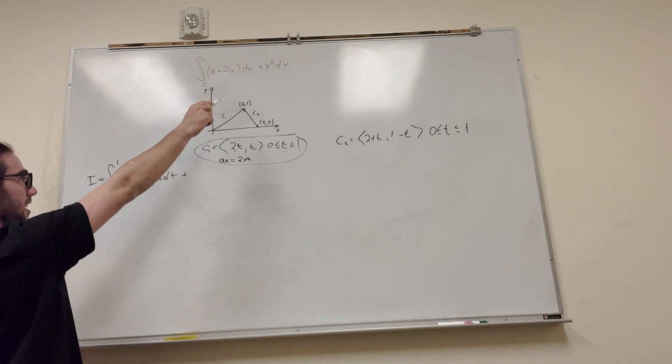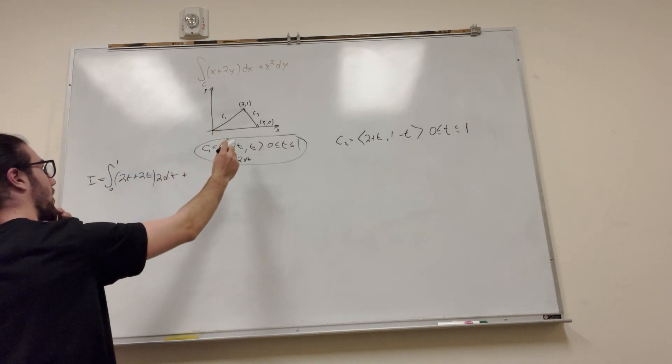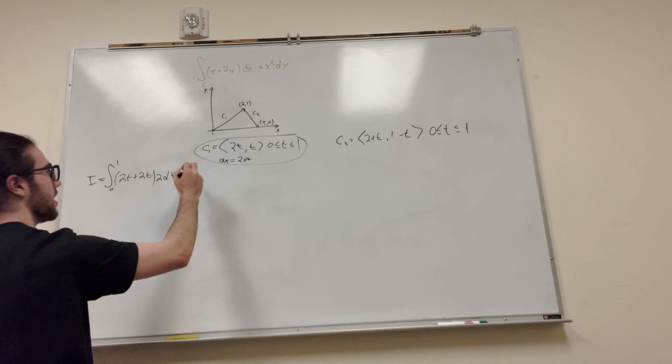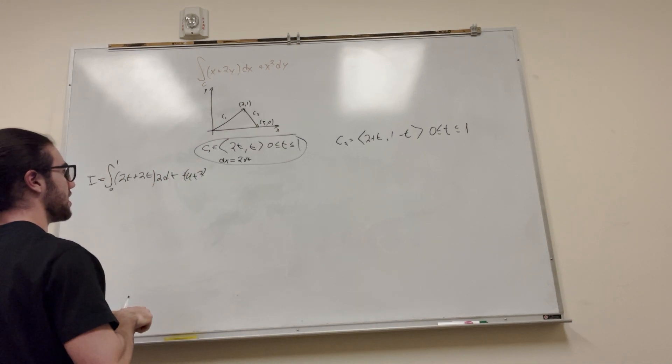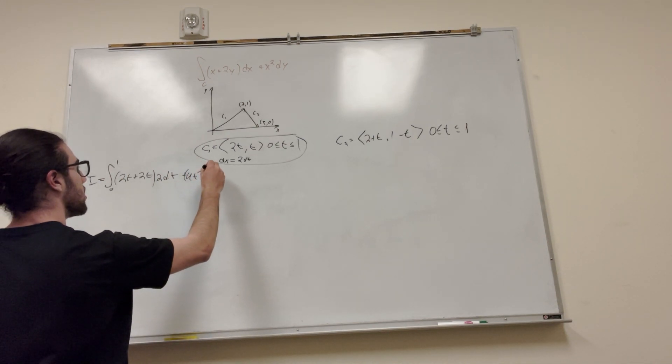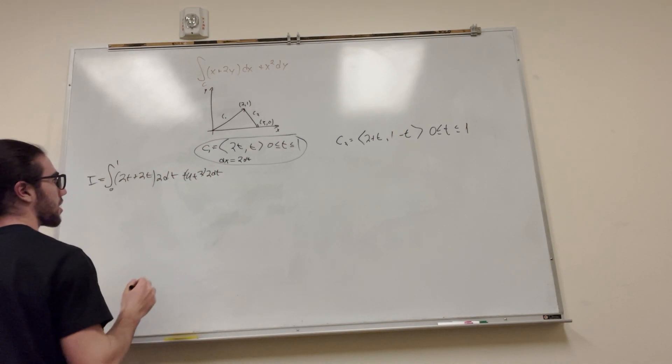And then okay, so now on to our next, x squared. x is equal to 2t, that's going to be 4t². And then again we have to do the 2 dt. All right, that's our first integral.